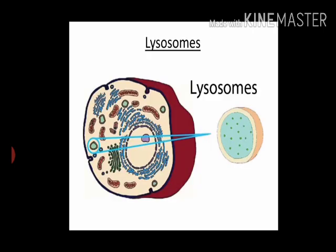Coming to lysosomes — these are a kind of waste disposal system of the cell. Lysosomes are meant to dispose of waste within the cell and help keep the cell clean. They clean by digesting any foreign material — if any foreign substance enters the cell, they attack, clean, and expel it. When the cell is damaged, lysosomes help in recovering the cell organelles. Foreign materials such as bacteria, food, and old organelles all end up in the lysosomes.